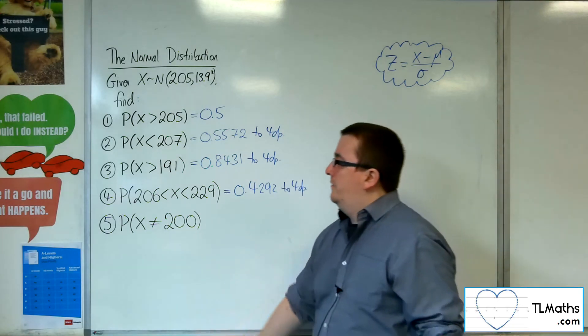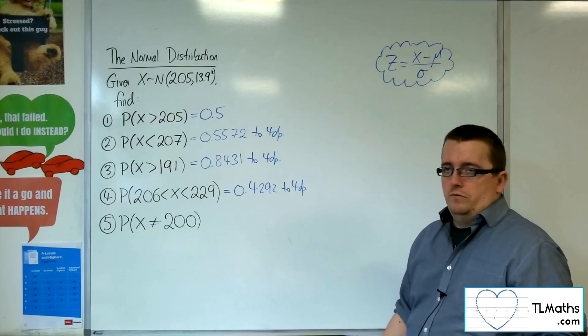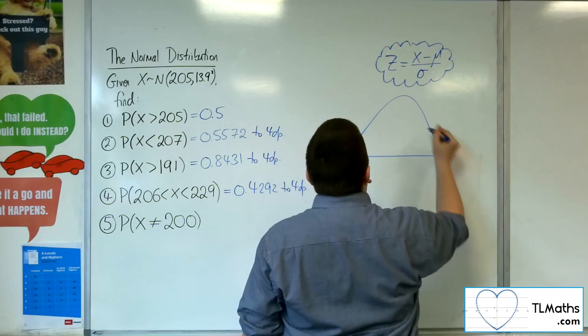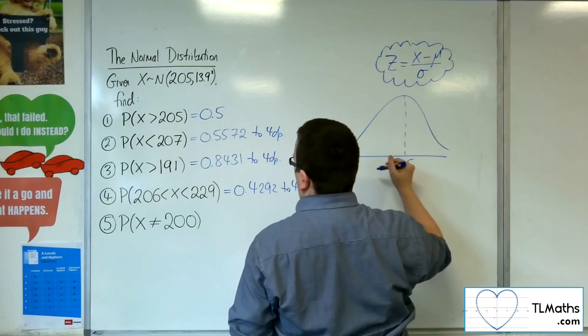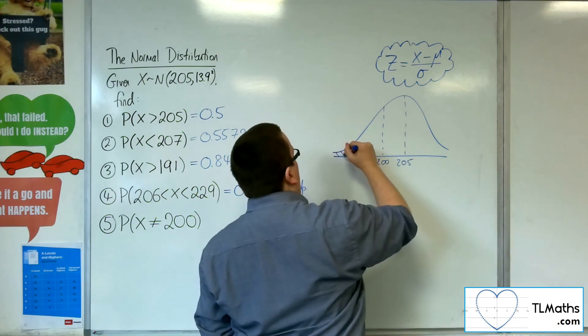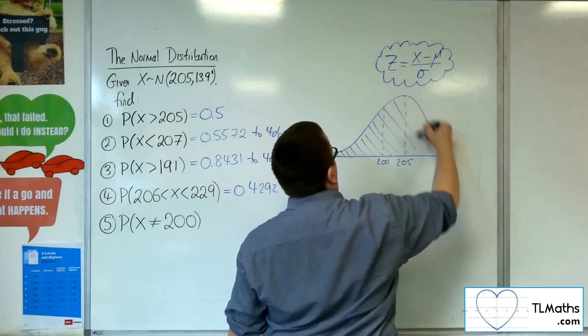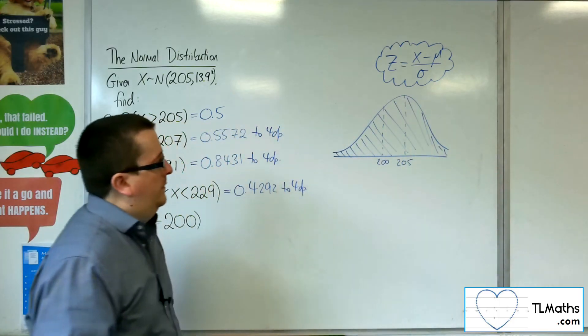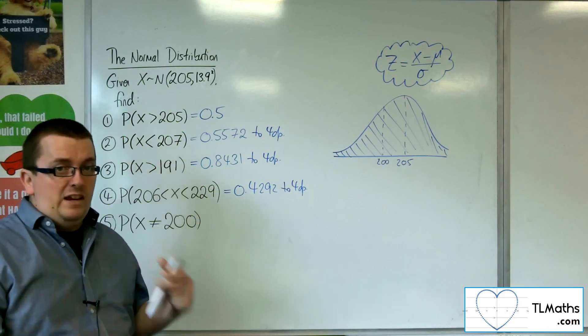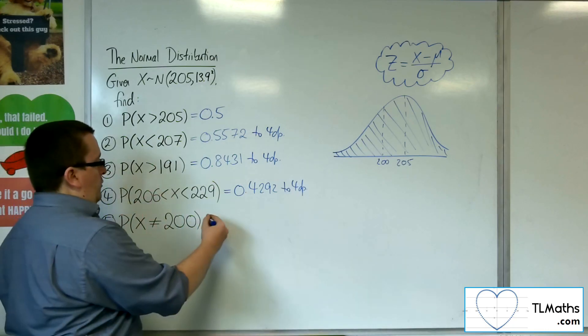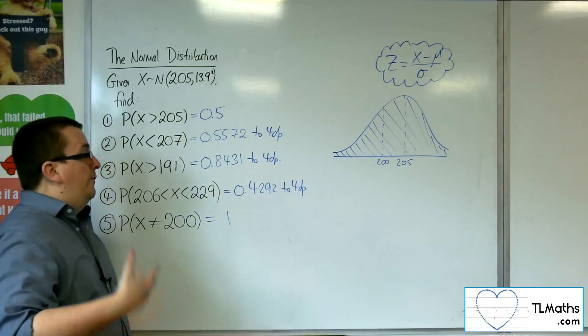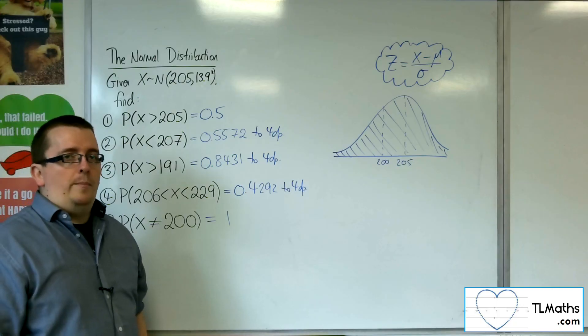So number five. The probability that X is not equal to 200. Well, in the last video, we looked at the probability of X being equal to a certain value. In this question, it's not equal, the probability of X being not equal to 200. So that is actually meaning anything, anything other than exactly 200. We know the probability of X being equal to 200 is 0. So the probability that X is not equal to 200 is 1. So that's how we can solve that problem without falling into a little trap.